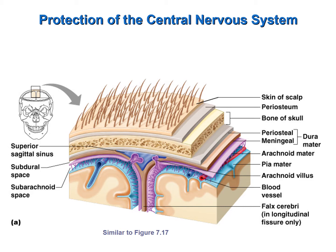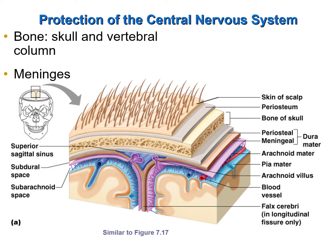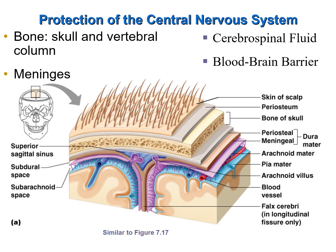The central nervous system is protected by the following: bone, meninges, cerebrospinal fluid, and the blood-brain barrier. I will discuss bone and meninges in this slide and discuss cerebrospinal fluid and the blood-brain barrier in subsequent slides. The figure shown here is a section taken from the superior most portion of the head. You can see the skin with the scalp attached. Directly below the skin and scalp we have bone. Cranial bones are flat bones, so they have a layer of spongy bone sandwiched between two layers of compact bone. That spongy bone acts like a shock absorber, absorbing mechanical energy that otherwise might do harm to the brain.